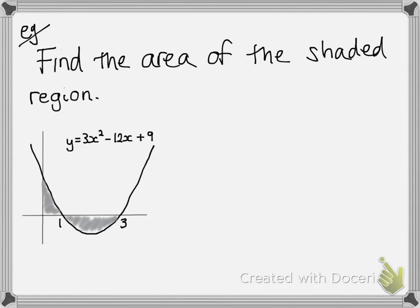So, here's our next example. Find the area of the shaded region. We've got this curve. Y equals 3x squared minus 12x plus 9. And we're looking for the shaded region, this grey part. So, we need to do those two different regions separately. The above the axis part and the below the axis part.